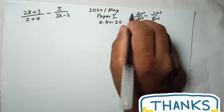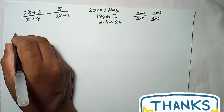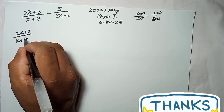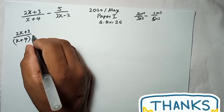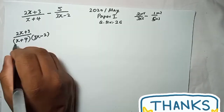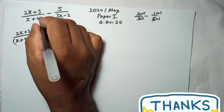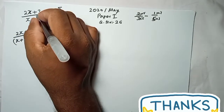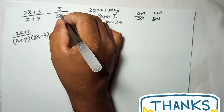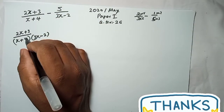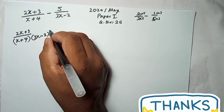We use the same method here. For the fraction with denominator (x+4), we multiply by (3x-2). I put it in brackets to indicate the whole expression — that whole denominator you multiply by the other one.